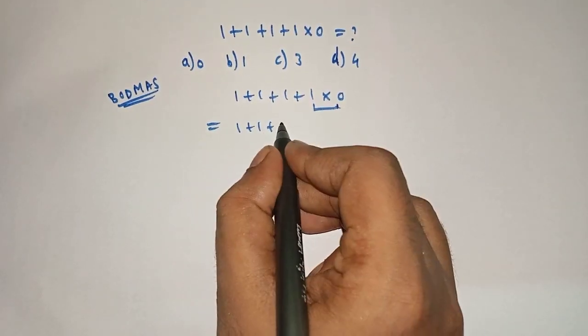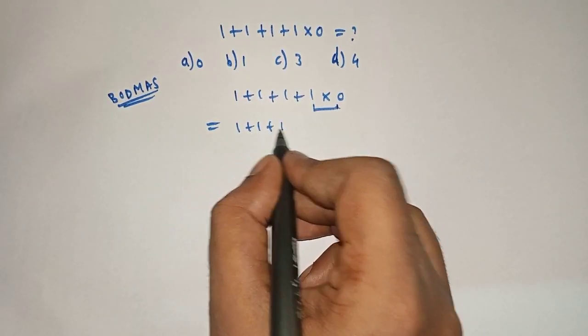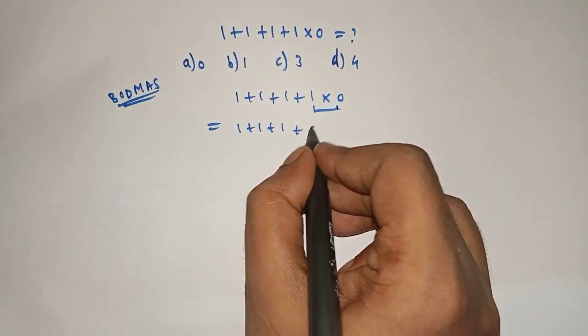So it will be 1 plus 1 plus 1 plus 1 into 0 is 0.